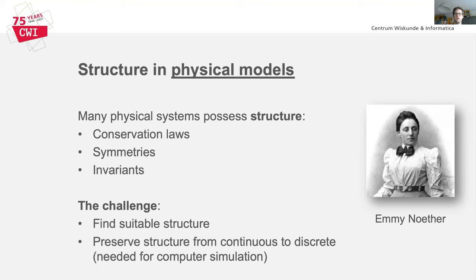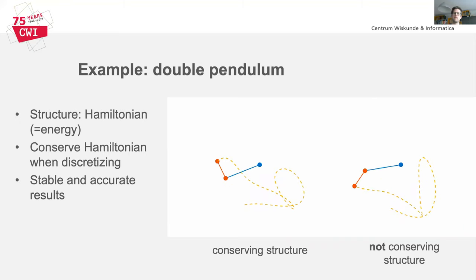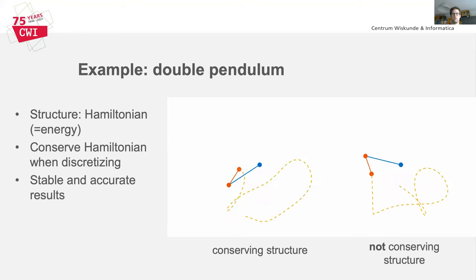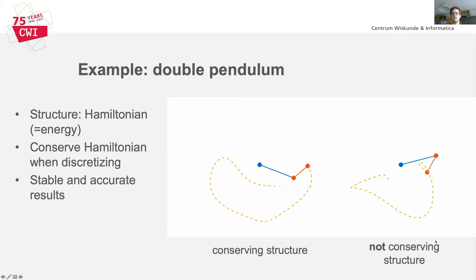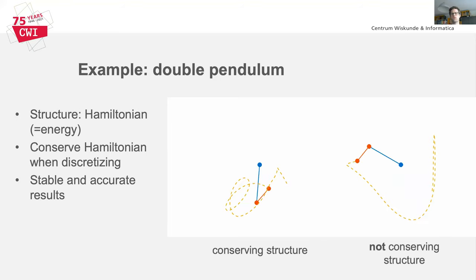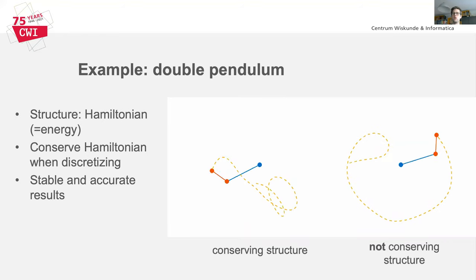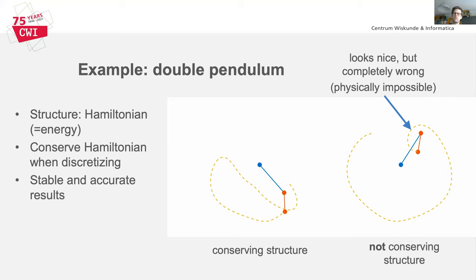Here is an example again of the double pendulum problem. An important structure in this system is conservation of the Hamiltonian. When simulating the system on a computer, it's not self-evident that the Hamiltonian will still be conserved. On the right, you see two simulations: one with a method that does conserve the Hamiltonian, and one with a method that does not. Although at first sight both simulations look reasonable, the method that does not conserve structure leads in the long term to completely wrong results, as the pendulum ends up at a higher position than where it started. Structure-preserving methods are therefore of crucial importance to obtain physically realistic results.